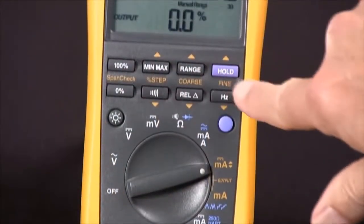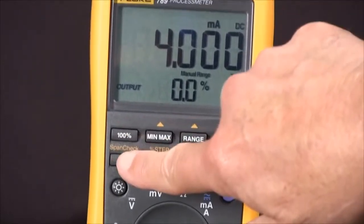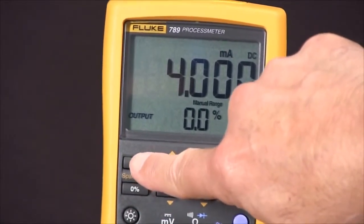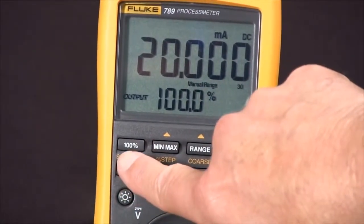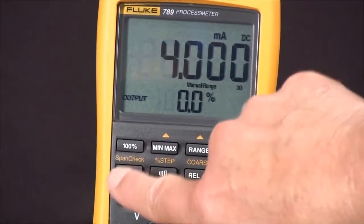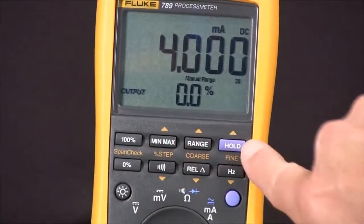We can start over here with the span check and we can go from 0% of span to 20 milliamps or 100% of span or zero. And then with these three we can do 25% of span coarse or fine adjustments.